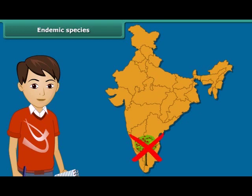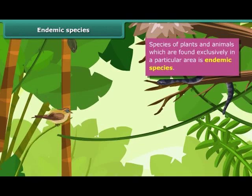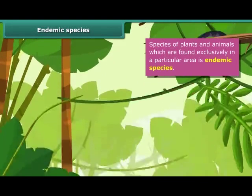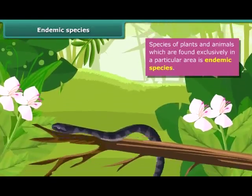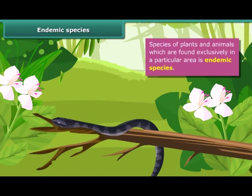No. Apple trees are usually found in the northern parts of India. Thus, species of plants and animals which are found exclusively in a particular area are called endemic species. They are not found anywhere else. A particular type of animal or plant may be endemic to a zone, a state, or a country.